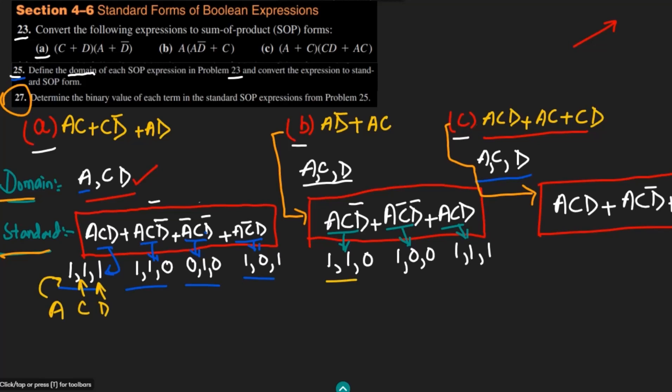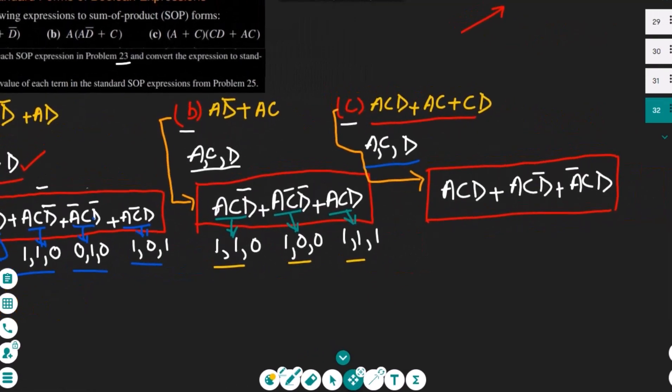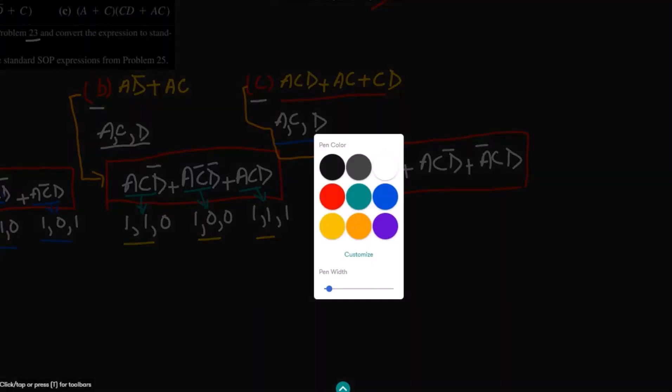The same will be followed here, same here and same here. Here we have this, here we have this last form, this one, and also we have to find the binary values.